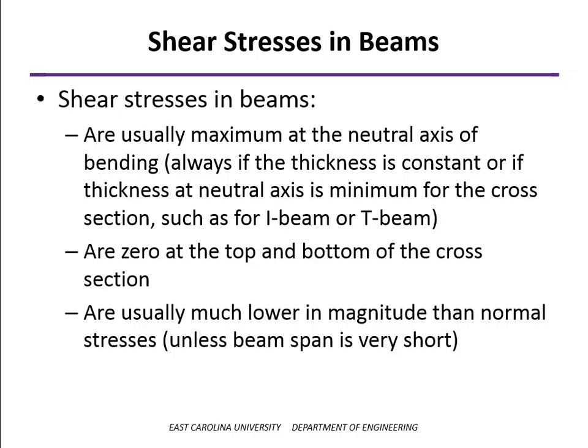The exception would be if the beam is a very short beam. For example, a bolt can be considered to be a short beam. Railroad ties sometimes will fail in shear — they crack along the mid-surface of the cross tie. But for most beams, especially in machine design or construction, the span of the beam is much longer and the shear stresses are quite low.